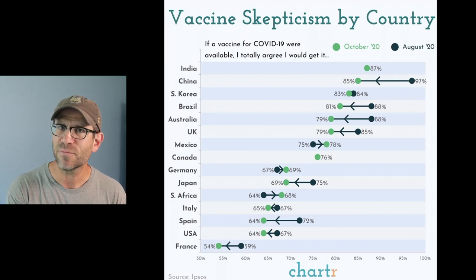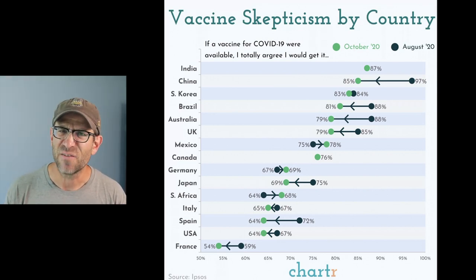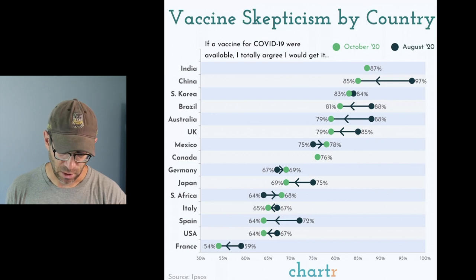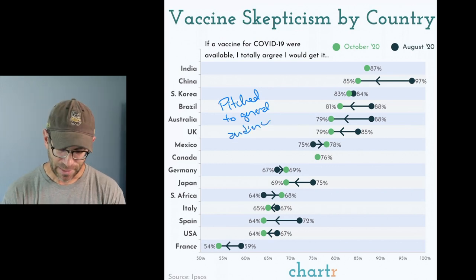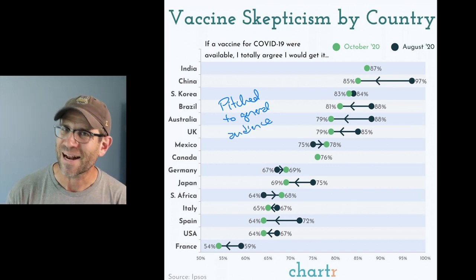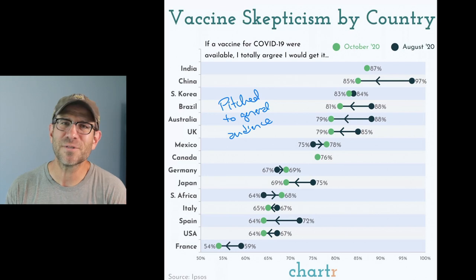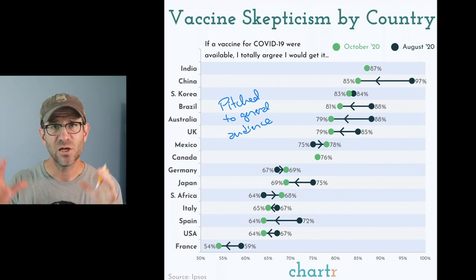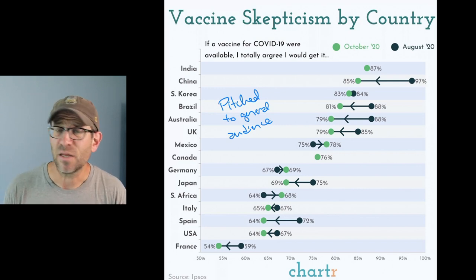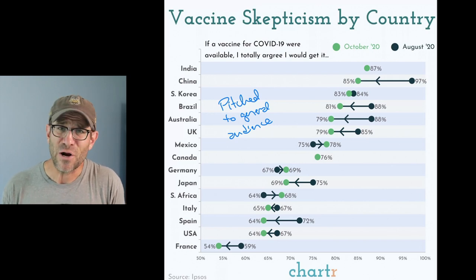I actually saw the Chart-R version before I saw the Ipsos version, so all those questions I had about Ipsos I also had for Chart-R. Let me tell you what I liked about this figure first. I think it's pitched to a general audience — whenever I see this type of styling with colors and distinctive fonts, I think it's more public-facing. I received it as part of an email newsletter about data visualizations, not a very technical audience by any means.